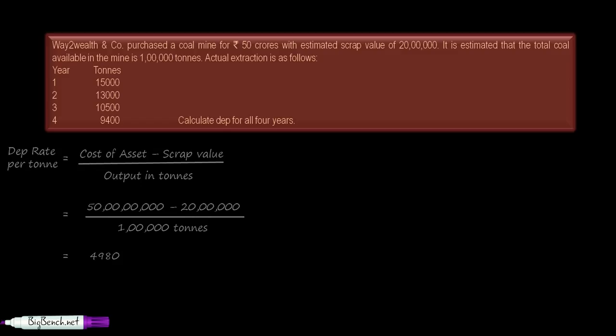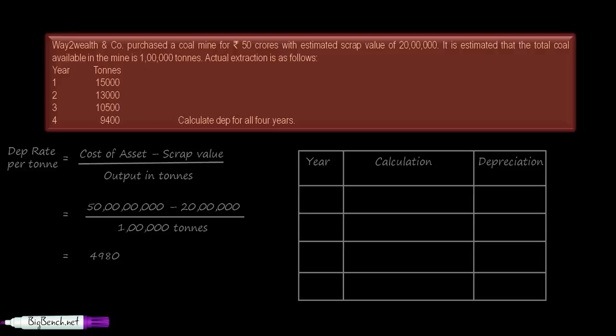Now let us calculate the depreciation for all the years using this method. This is the typical format, the same format we used for the previous method. First year: the rate is 4,980 times the actual extraction of coal in the first year, which is 15,000 tons. So 4,980 times 15,000 equals 7 crore 47 lakhs. Second year: 4,980 times 13,000 equals 6 crore 47 lakh 40,000.